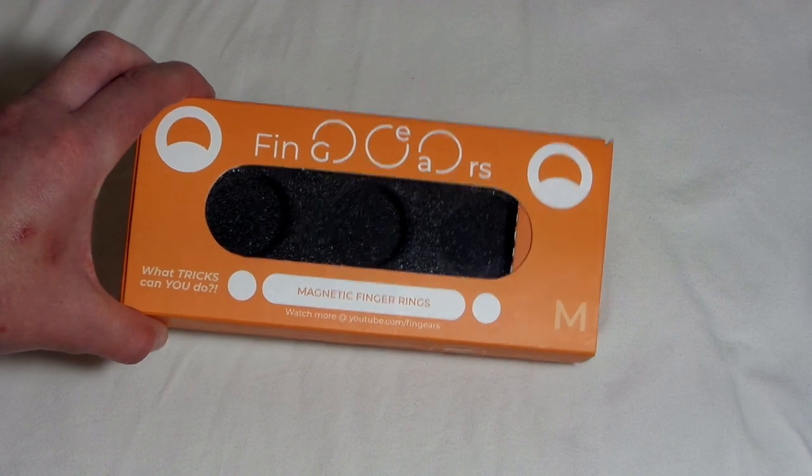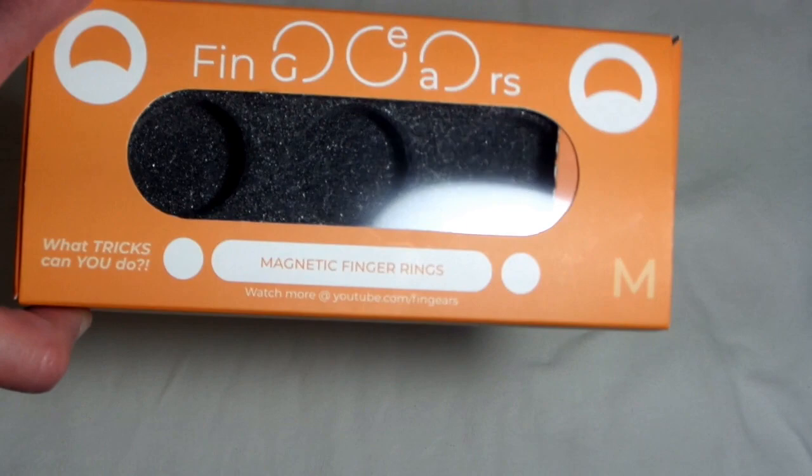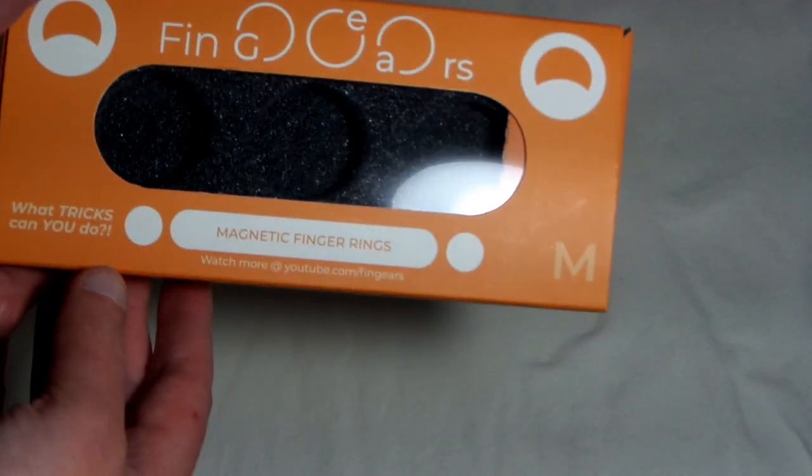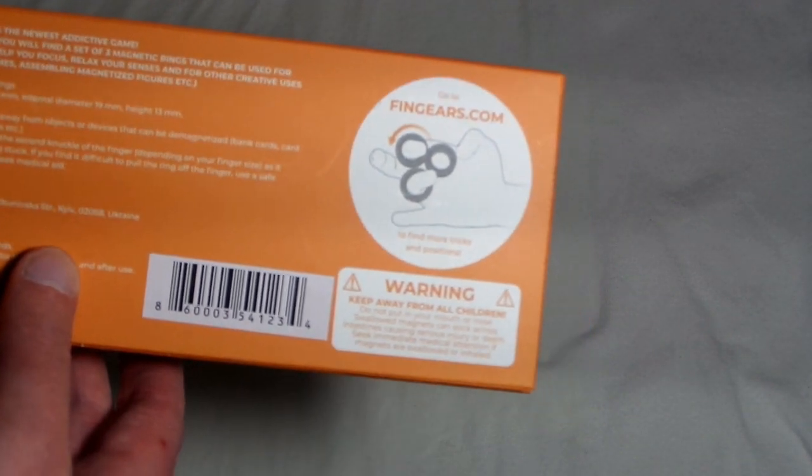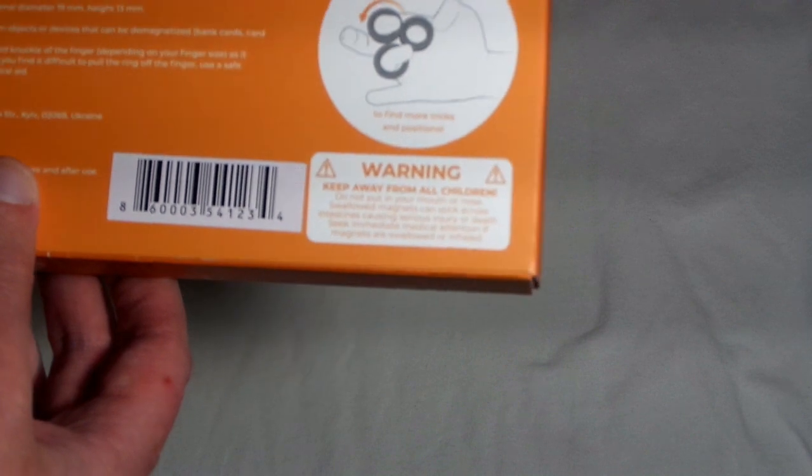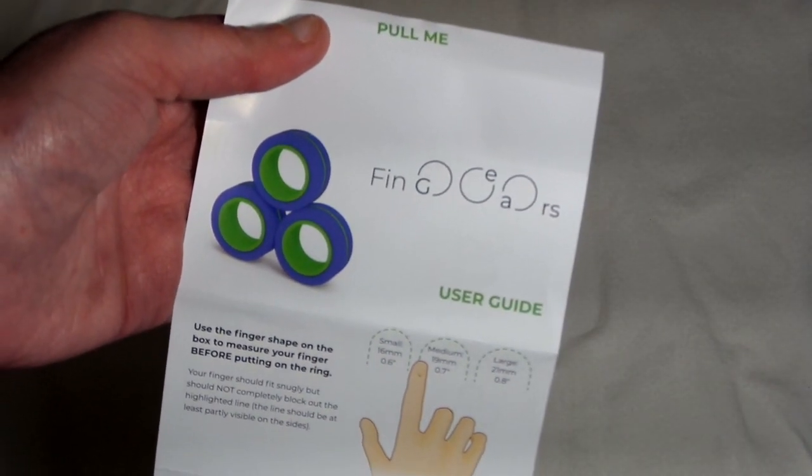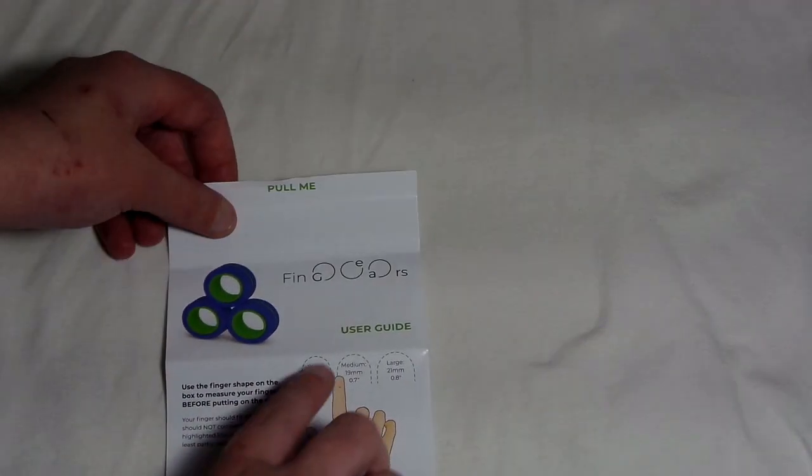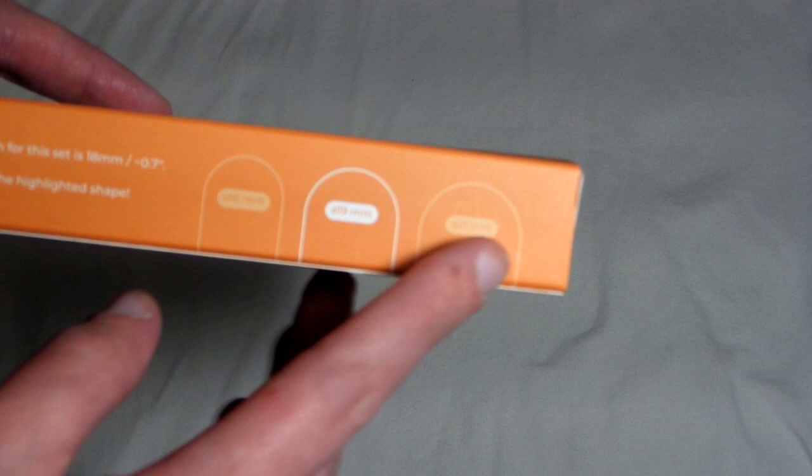So here's the box. It says Fingears with their cool logo here with the different finger rings, and then it says magnetic finger rings. These are the size medium. On the back it says you could go to fingears.com to learn more tricks and positions. On the side of the box it has different sizes - small, medium, and large. My finger would probably fit the small a little bit better, but I got the medium size.